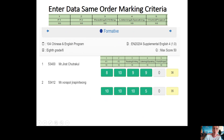We enter the formative data in the same order as in the marking criteria spreadsheet. Column one is formative one, column two is formative two, column three is reading and writing, listening and speaking, and column four. Work or project is column five. As you can see, it's max 10 in each area. If you try to enter 11, 12, 15, or 20, the system will not allow you. There should be five scores and the max is 50, as you can see here with max score 50.